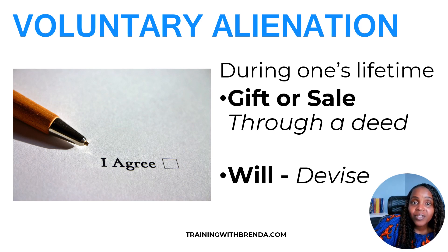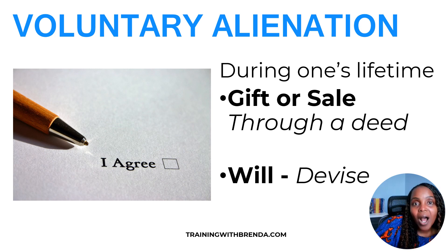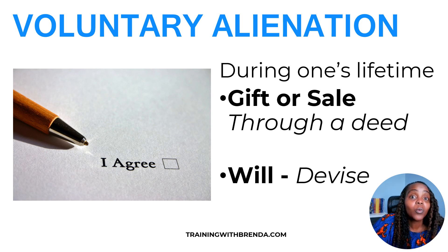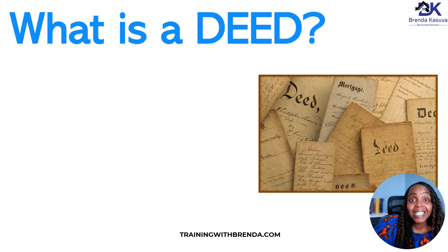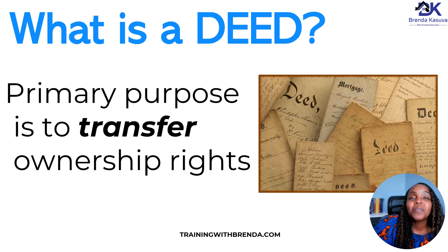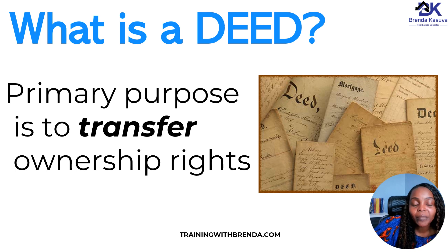Or ahead of time, you are deciding when your time comes — when you're no longer with us — who will be owning that property. So you set up a will, and in that will, the devise is known as a property, and you elect the devisee, the person who is going to get the property when you're no longer with us. That is under voluntary alienation — how you're disposing of the property by choice, done through a deed. A deed, simply put, is a piece of paper used to transfer the property and the rights along with it. The primary purpose of the deed is to transfer the ownership rights.